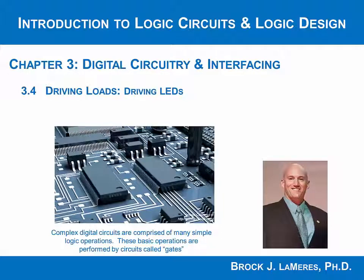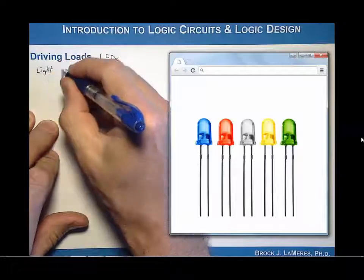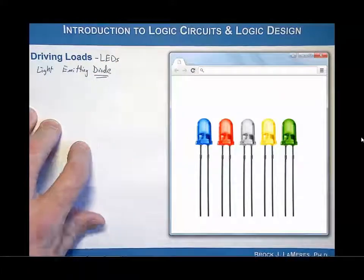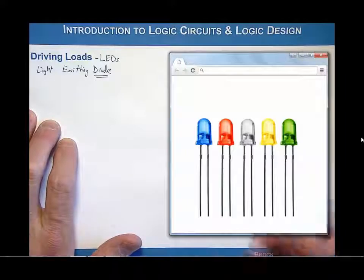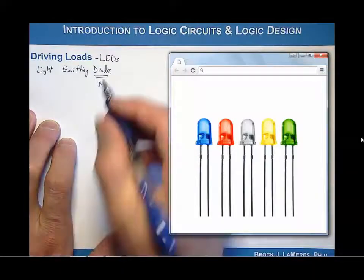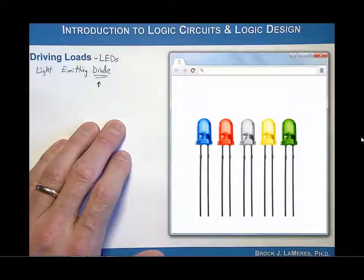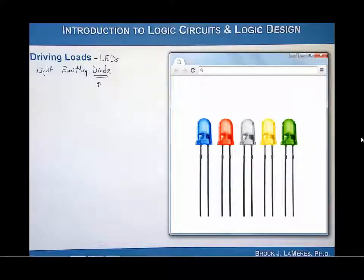Now let's look at driving a very common load called a light-emitting diode, or LED. LED stands for light-emitting diode. A diode is an electronic device which has a particular behavior, and a light-emitting diode is a specific type of diode that will emit light under certain conditions. To understand how voltage and current flow through an LED, we first have to understand what a diode is. LEDs are a very common device driven by digital circuits, used in household electronics, breadboards, lighting, televisions, monitors, and displays. So it becomes important to understand what considerations need to be made.